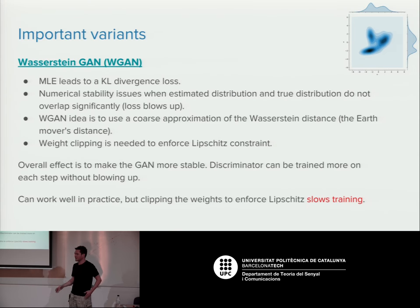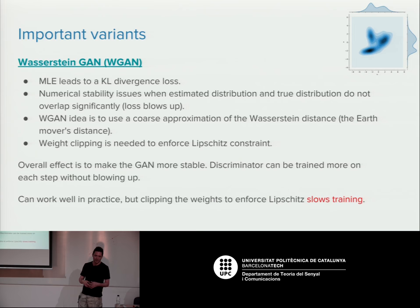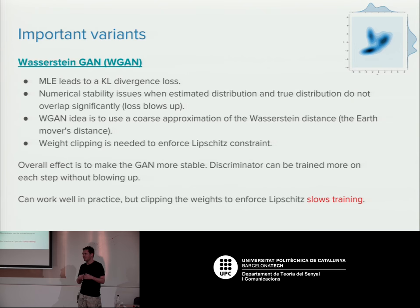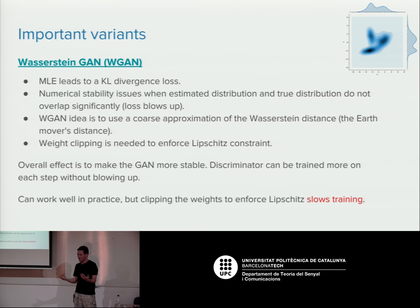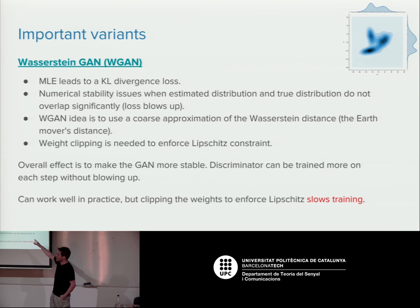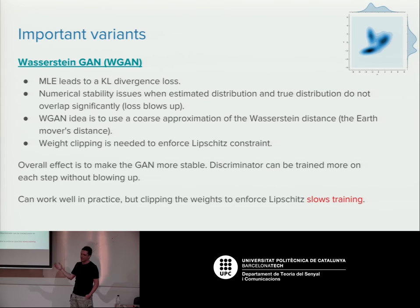One important development is the Wasserstein GAN (WGAN). In the standard GAN, the KL divergence-based loss can blow up to infinity when there's no good overlap between the distributions — when the generator and discriminator get out of sync. This paper argues you should use the Wasserstein distance (also called the Earth Mover's distance) instead, though it's generally intractable to compute directly.